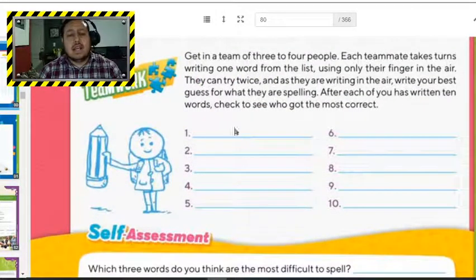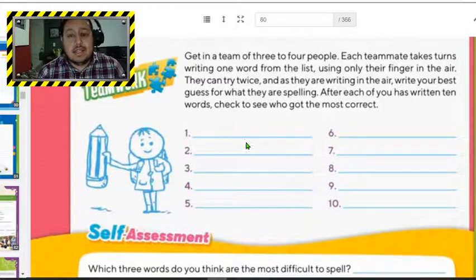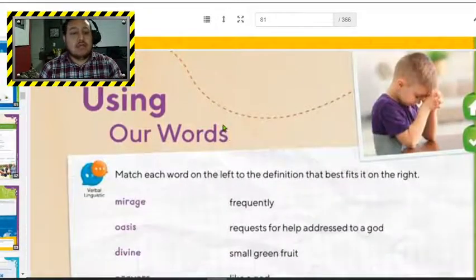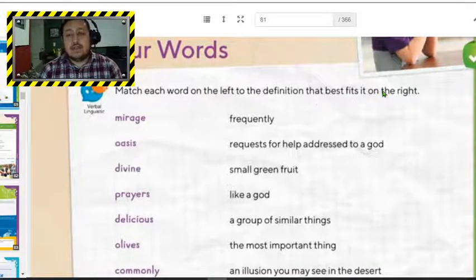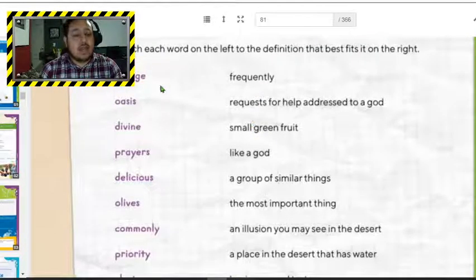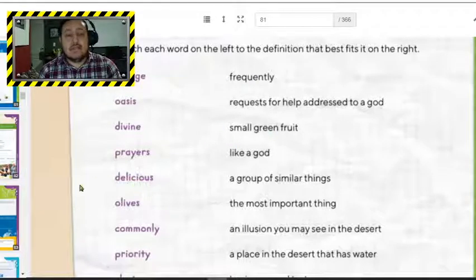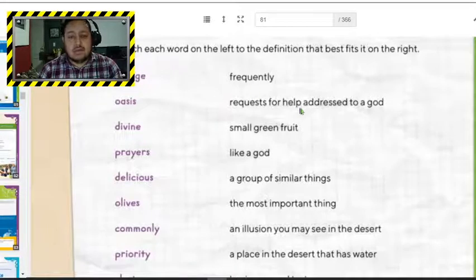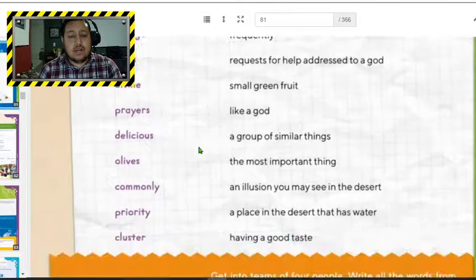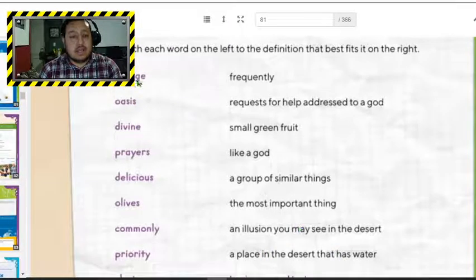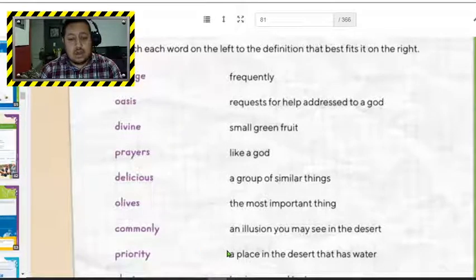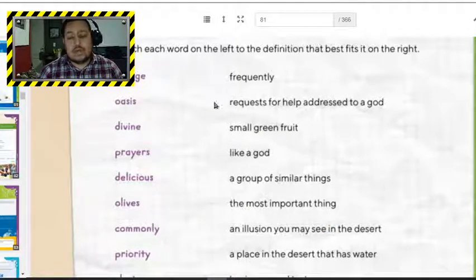And here, fortunately you're not going to do it, guys. This one, it was supposed to be funny and I know, but you need to be in pairs. And to finish the day, guys, we have using our words. Now you're going to use the words, but how? Match each word on the left to the definition that best fits it on the right. So here, guys, I have, we have the words and then you need to match it with the definition. So what is mirage? Frequently, requests to help or address to a god. Small green fruit like a god. A group of similar things. The most important thing, an illusion you may see in the desert. A place in the desert that has water or having a good taste. So I can tell you that mirage will be a place in, I'm sorry, an illusion you may see in the desert. So mirage will be an illusion you may see in the desert. So you need to match these words with the definition.